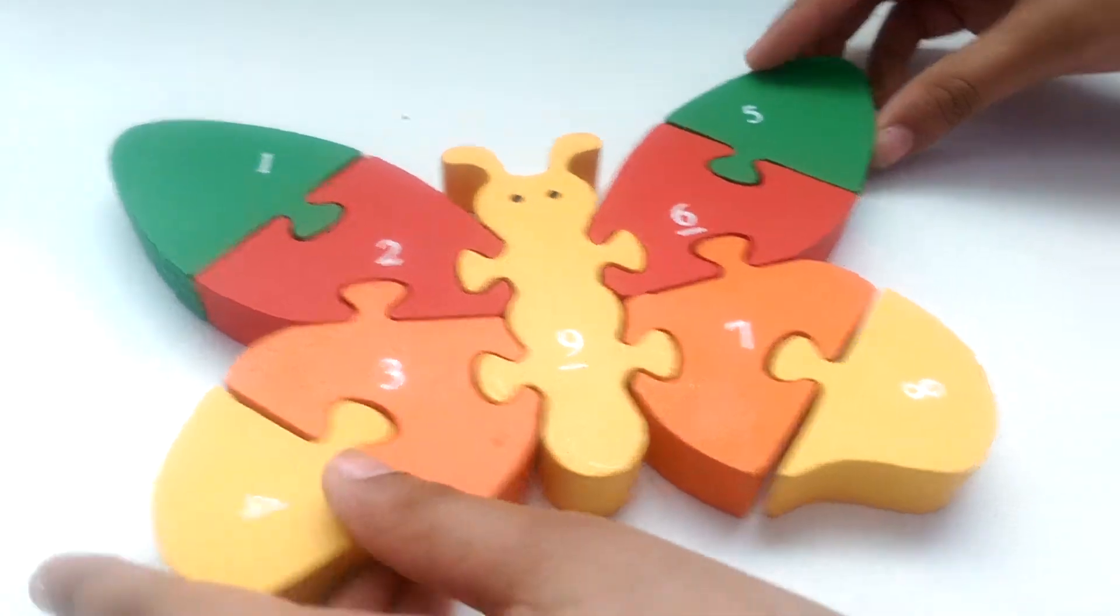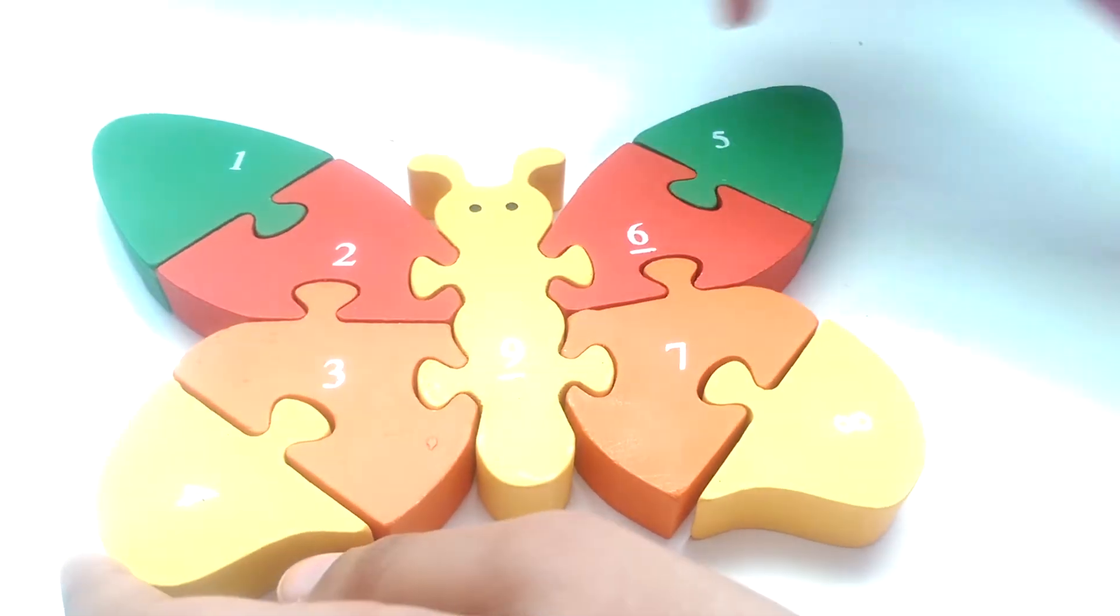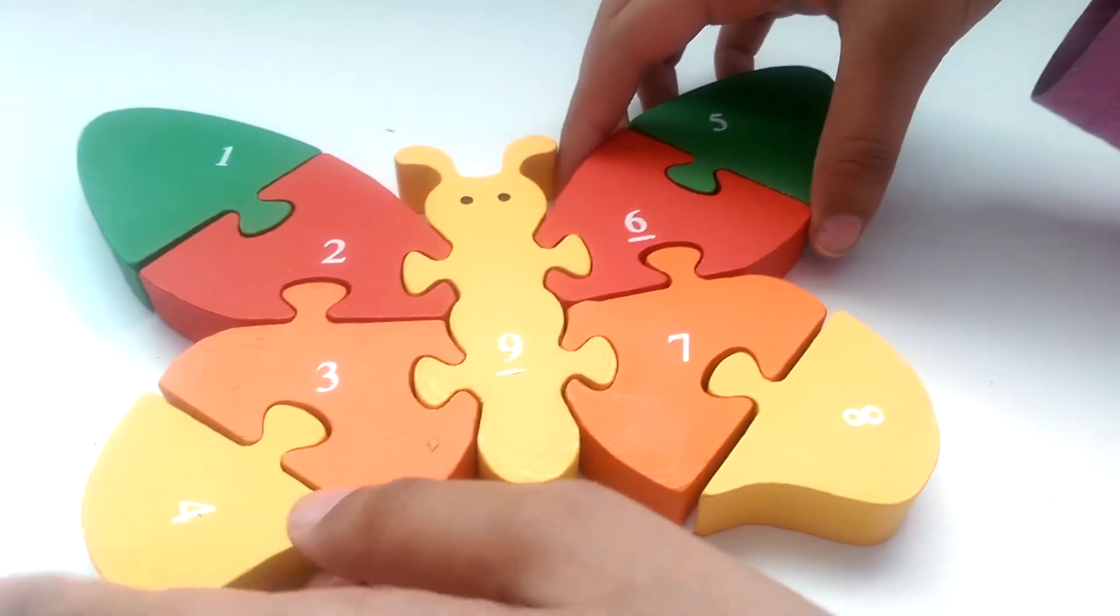And it's kind of like rainbow. Red, orange, yellow, green. Red, orange, yellow, green. It's like a rainbow.